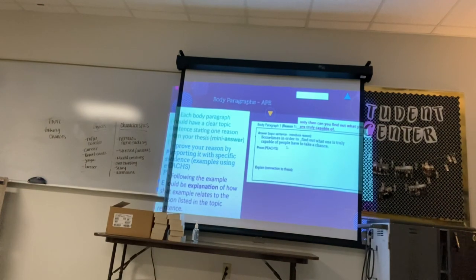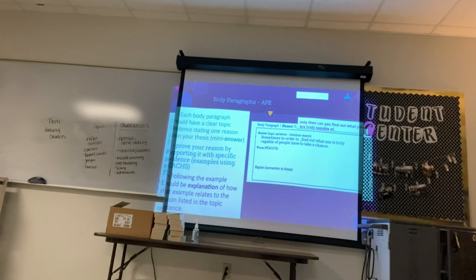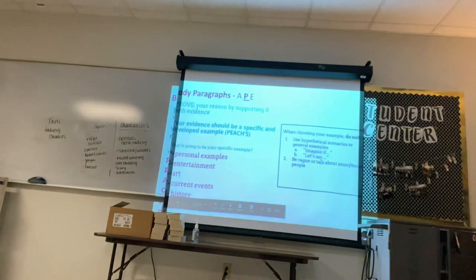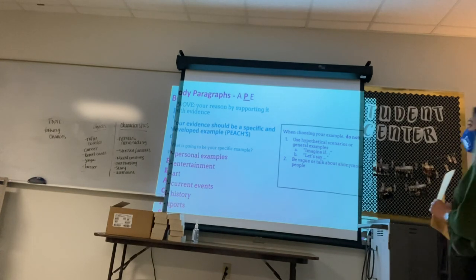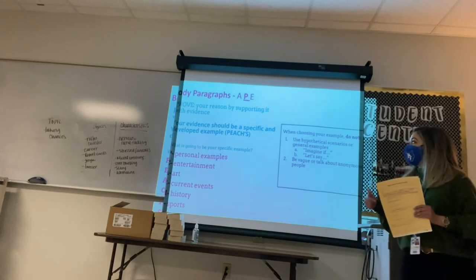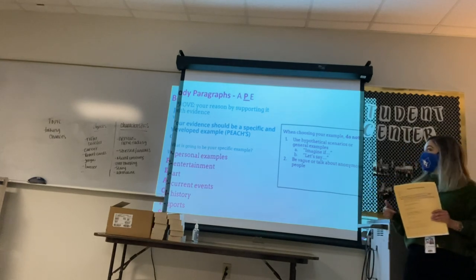So here's an example: sometimes in order to find out what one is truly capable of, people have to take a chance. That's the same reason that I have here — this is the body paragraph from the outline. And then after the A, we look at the P, which is you prove your reason by supporting it with evidence.